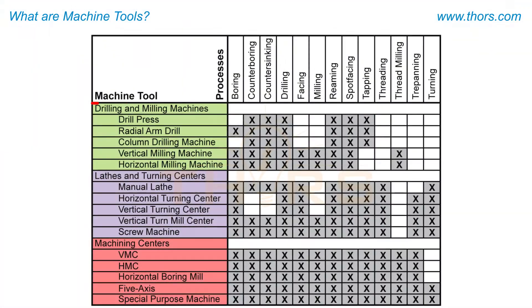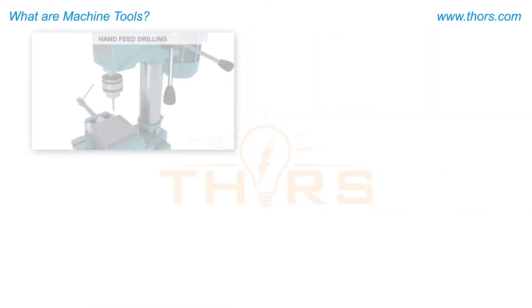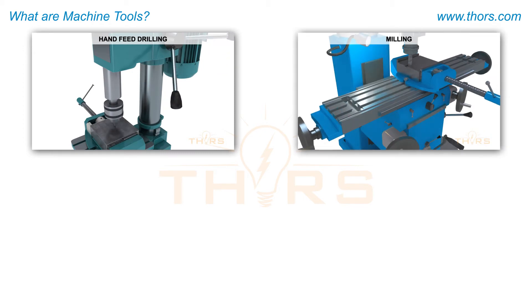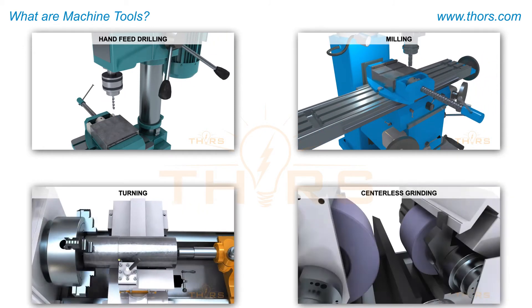Using a machine tool, the workpiece is cut or shaped with various machining processes. The most common of which include drilling, milling, turning, and grinding.